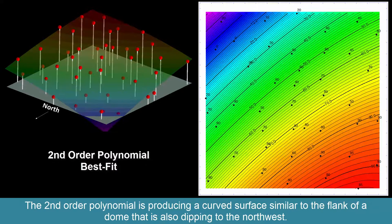The second-order polynomial is producing a curved surface similar to the flank of a dome that is also dipping to the northwest.